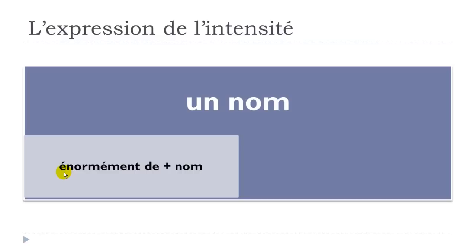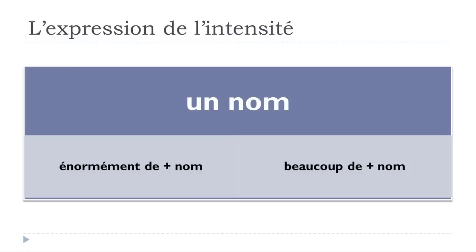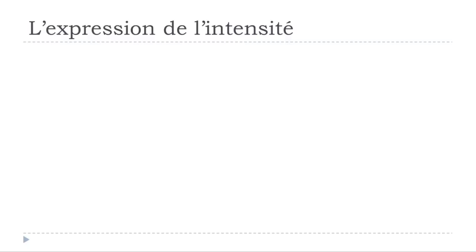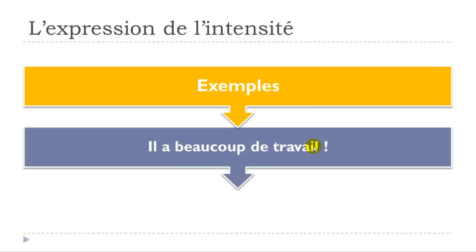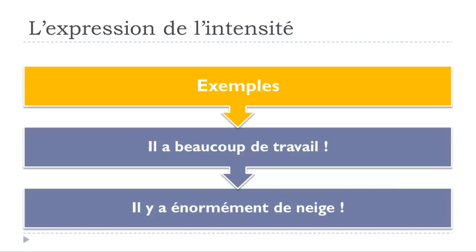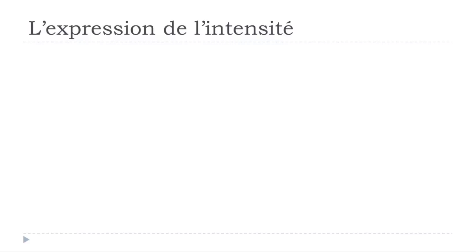With a noun, you can use ÉNORMÉMENT DE or BEAUCOUP DE followed by your noun. For example: IL A BEAUCOUP DE TRAVAIL — he has a lot of work. IL Y A ÉNORMÉMENT DE NEIGE — there is an enormous amount of snow. Remember: BEAUCOUP DE or ÉNORMÉMENT DE, then your noun.